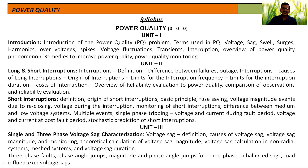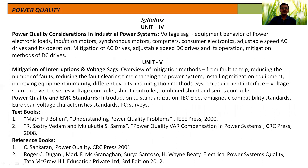Coming to the third unit, we will discuss single and three-phase voltage sag characterization. First: what is voltage sag, its definition, causes, magnitude, monitoring, and all calculations. Similarly, voltage sag characterization and calculations for three-phase faults — phase angle jumps, magnitude phase angle jumps for three-phase unbalanced sag. In the fourth unit, we will discuss power quality considerations in industrial power systems — what are the requirements of power quality, how the voltage should be maintained.